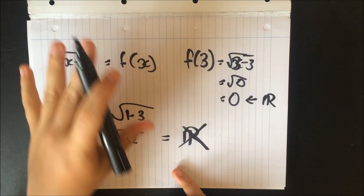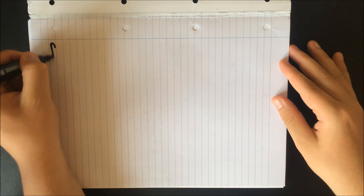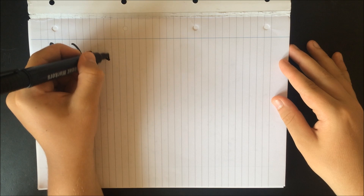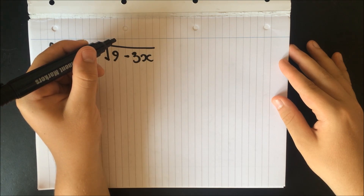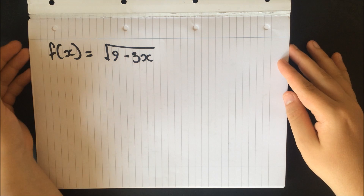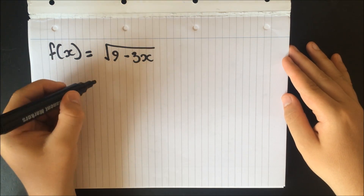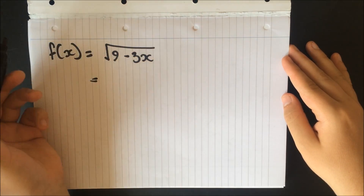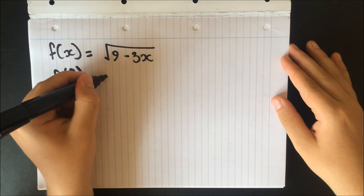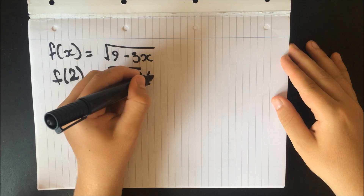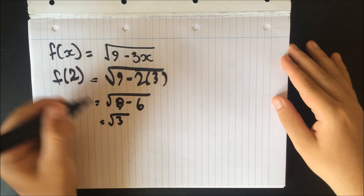So that's a quick example. I'll go through another example and let you do it yourself. Our function f of x is now equal to the square root of 9 minus 3x. If we were to do f of 2, that would give us the square root of 9 minus 3 times 2, which is 9 minus 6, which is the square root of 3. That is a real number.